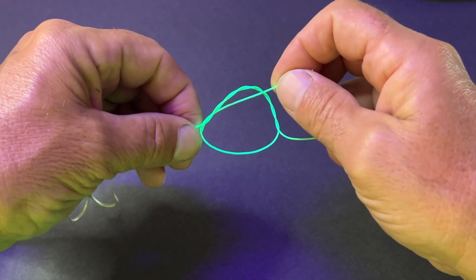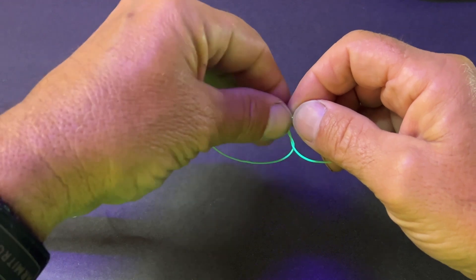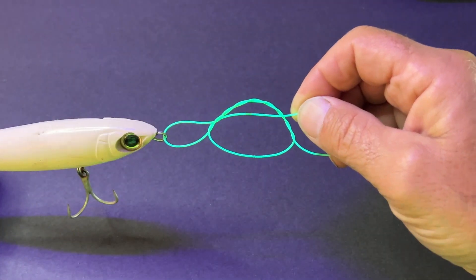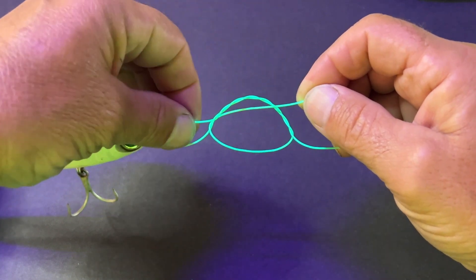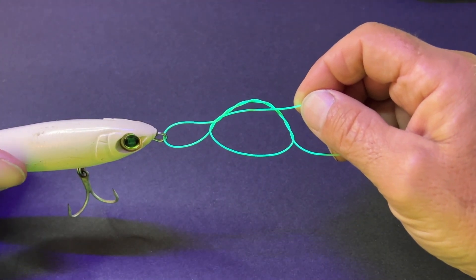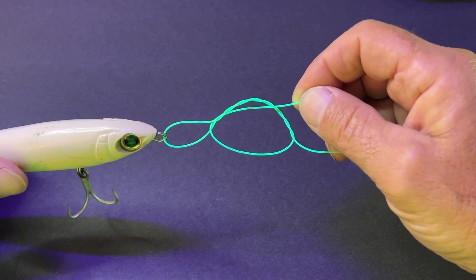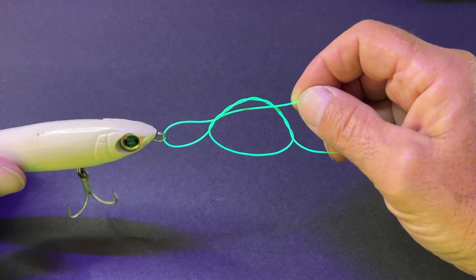Now I'm going to wet the fishing line. Wetting the fishing line will help the knot cinch or close better, and it will also help reduce friction when tying the knot.